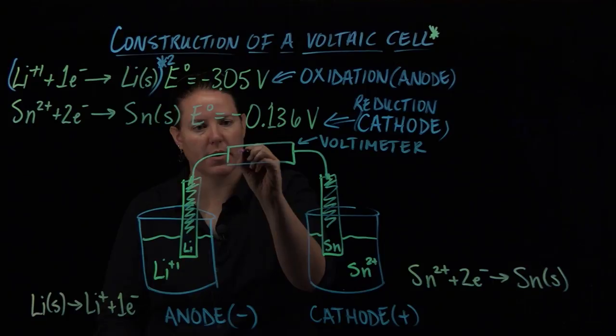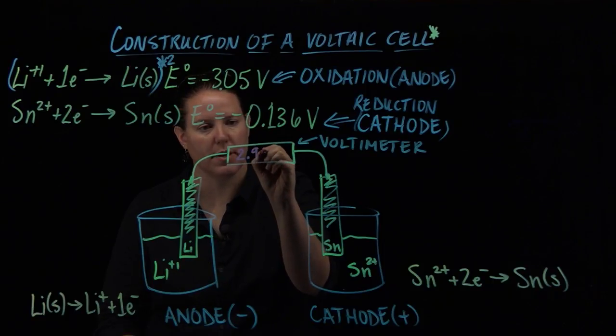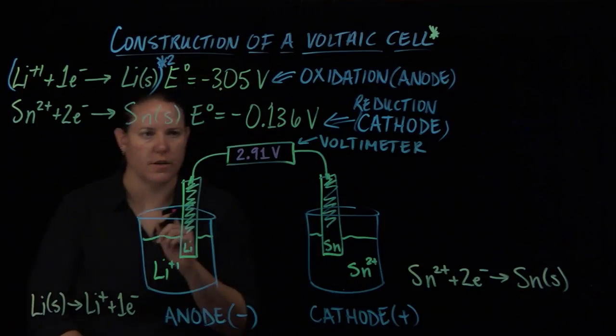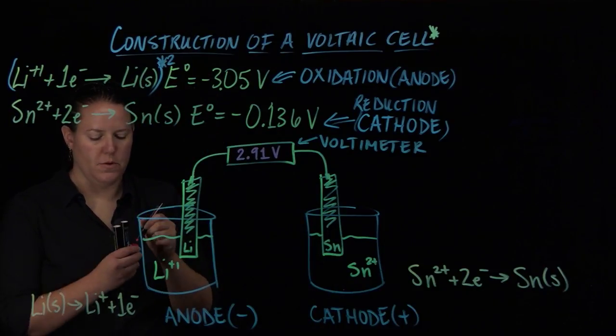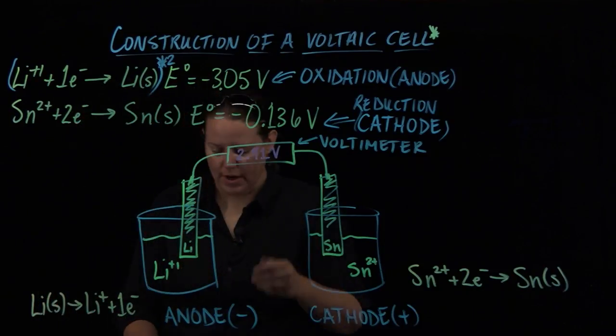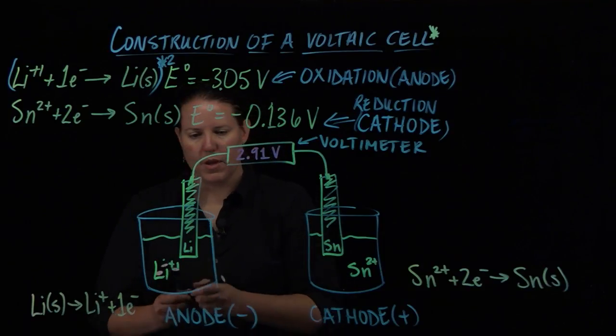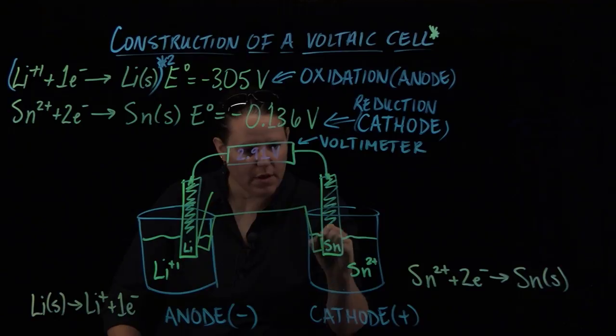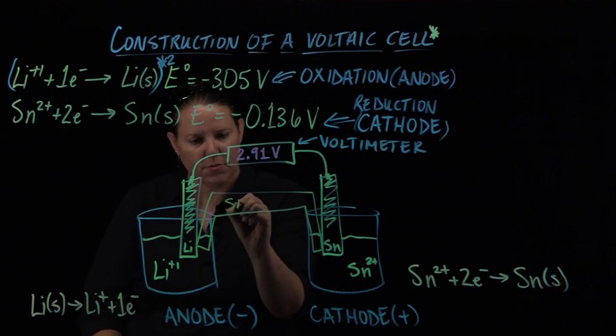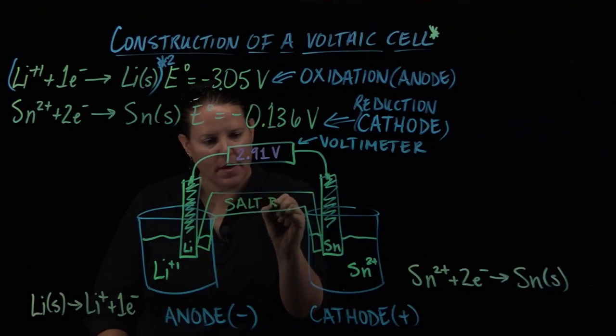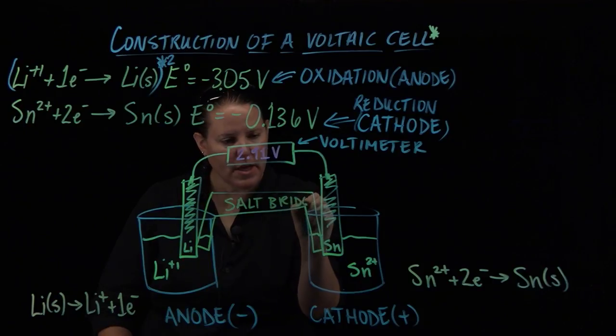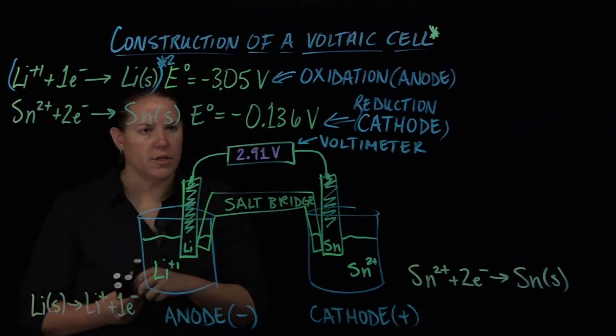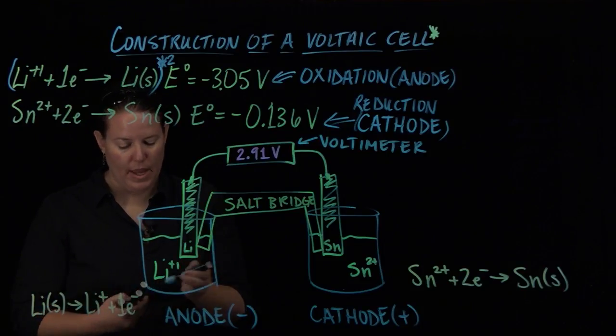You could either write that this is a voltmeter or you could just write what the standard cell potential would be between these two. I believe in the last video we calculated that is 2.91 volts. That's what the voltmeter should read. And then we have our beloved salt bridge because this won't actually happen until you have the salt bridge.